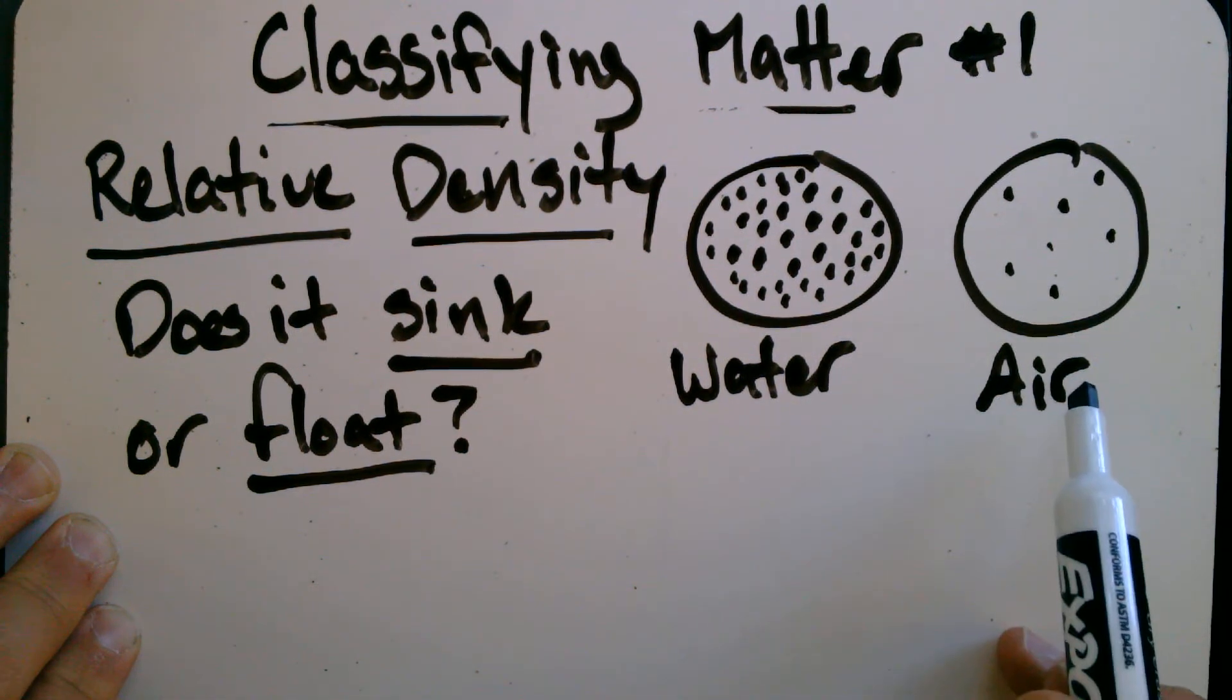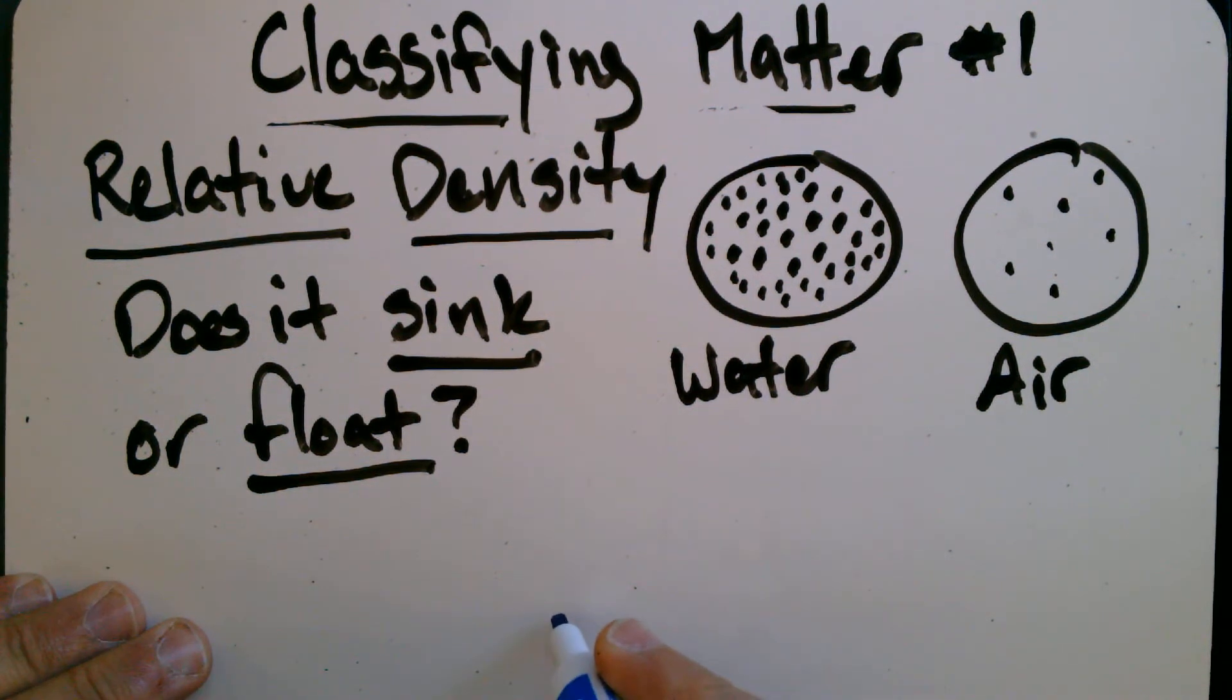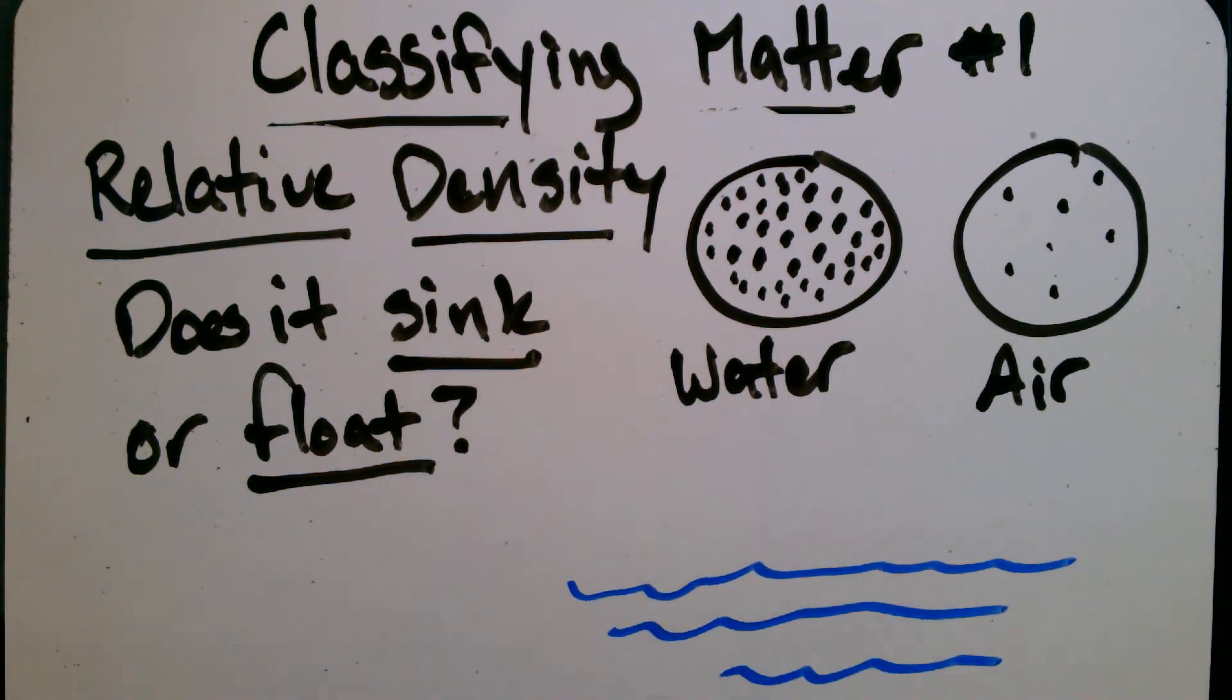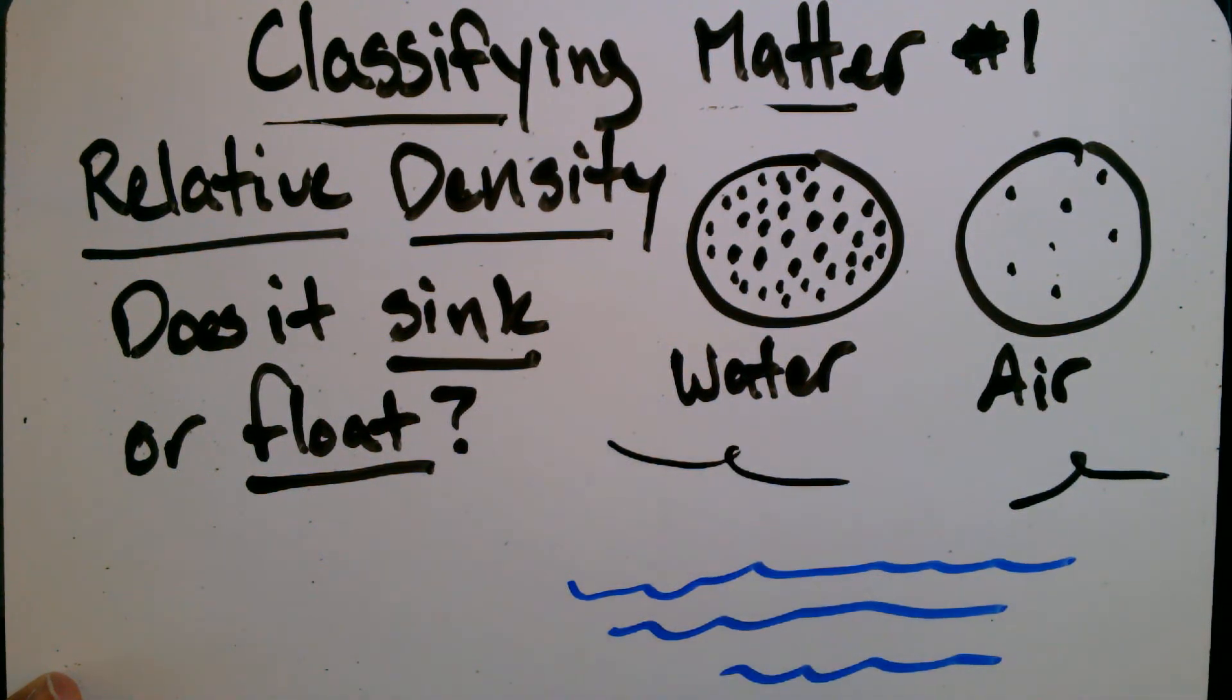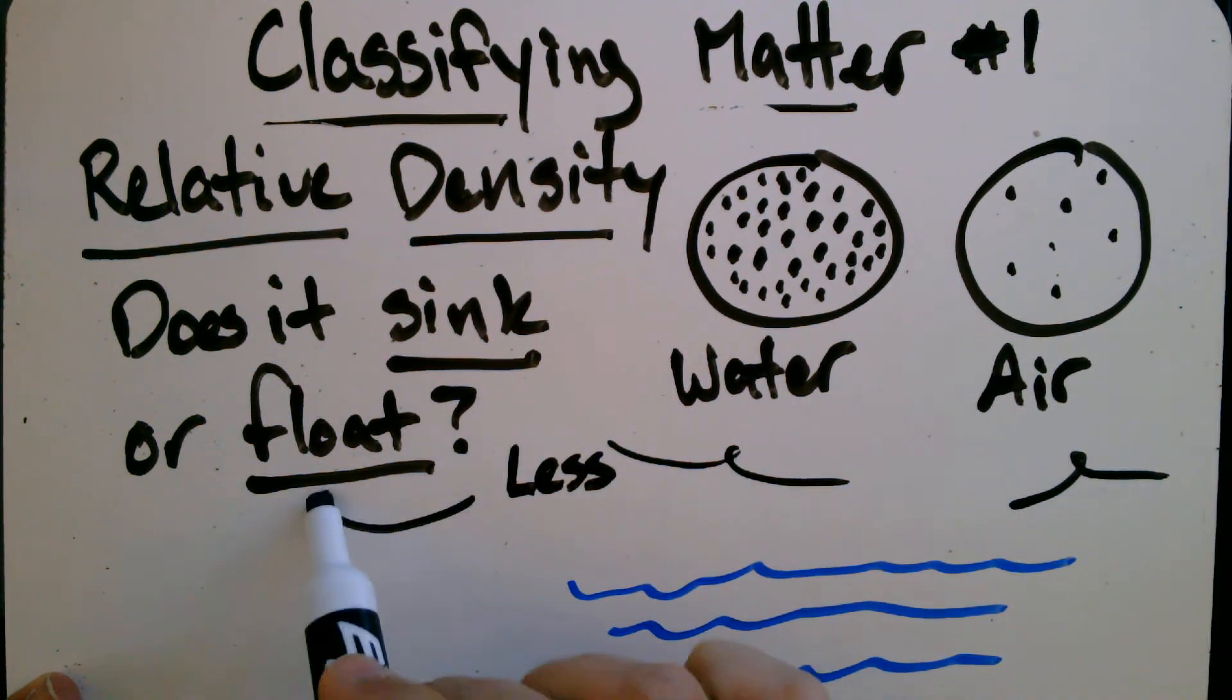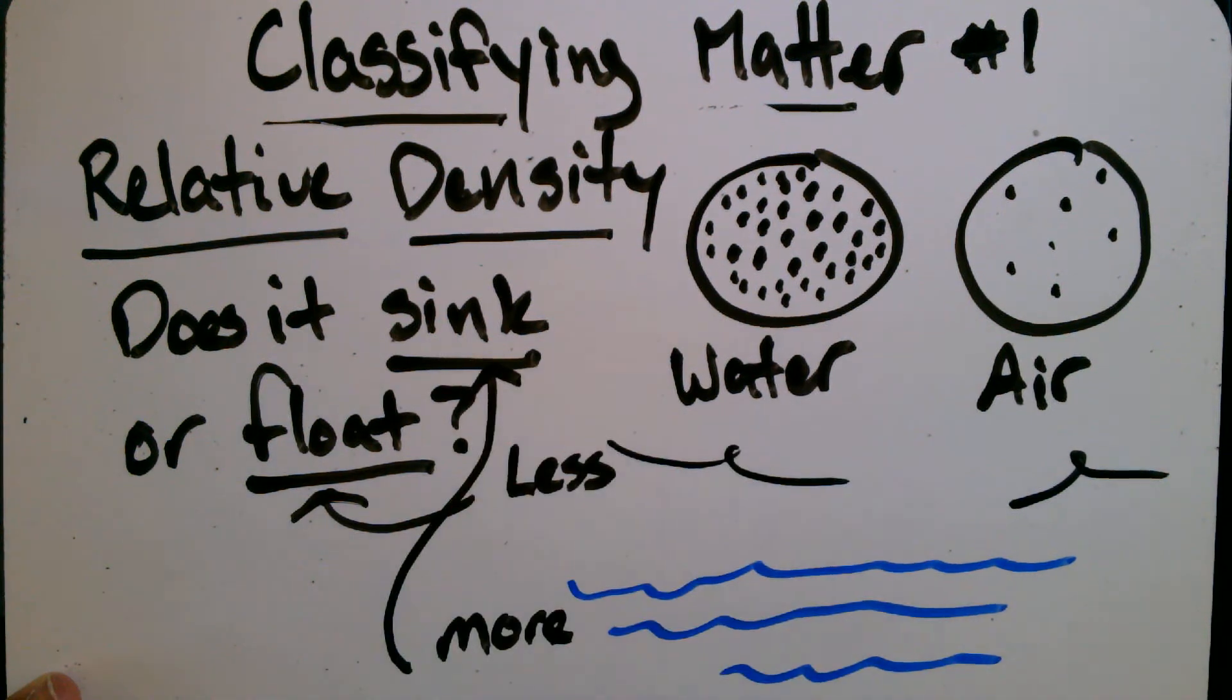So, if we're thinking about water and air, and we look out at Bailey Lake, what do we see? Well, we see the water. And then there's the air on top of it. So, the air is less dense than the water. And so, the air is less dense because it floats. And the water is more dense because it sinks.